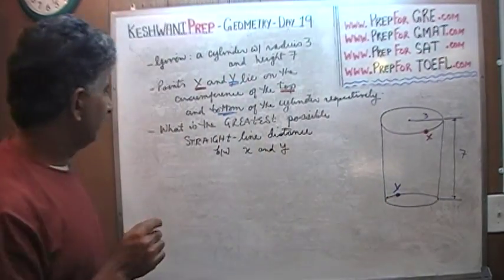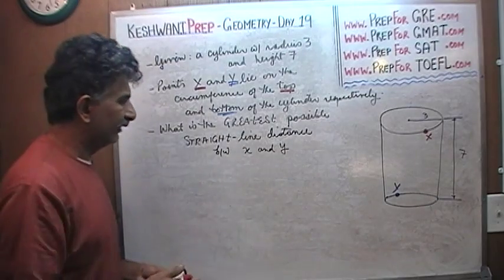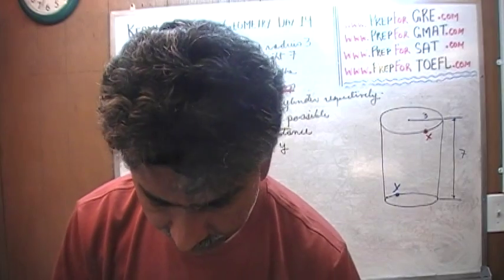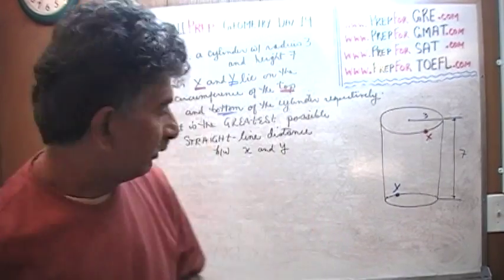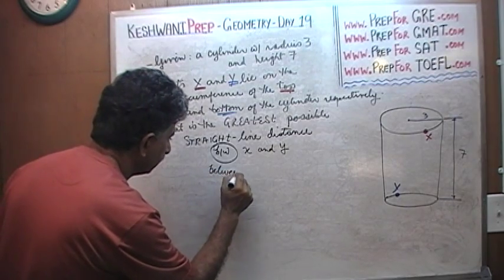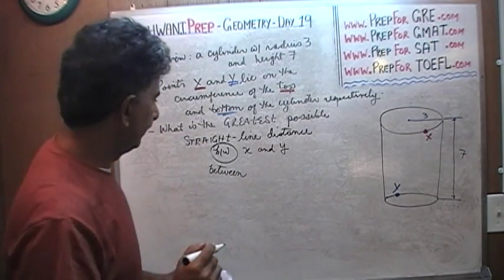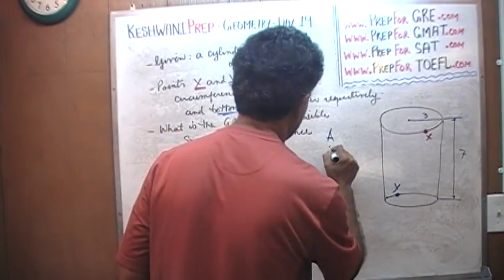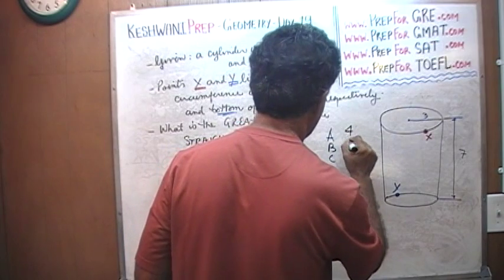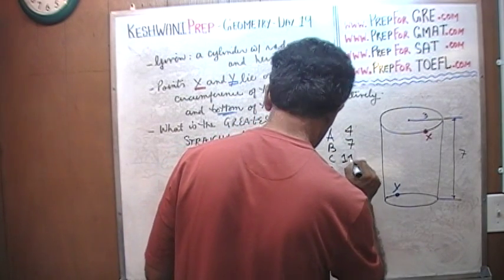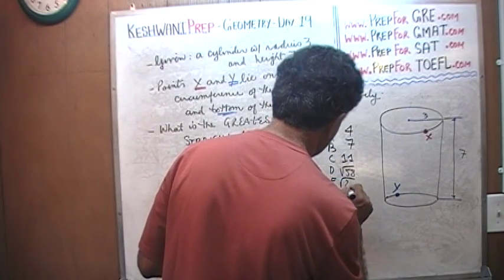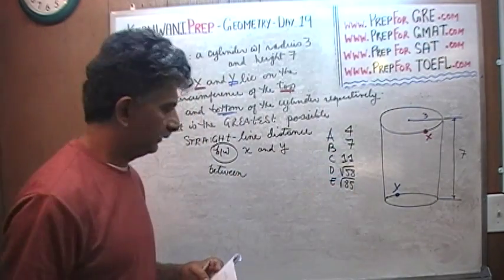The question simply is: what is the greatest possible straight line distance between X and Y? This is how I abbreviate 'between' because I'm lazy. Here are the answer choices: A is 4, B is 7, C is 11, D is root of 58, and E is root of 85. All of a sudden they introduced the root and root of 85, then they switch the digits. Something is going on.